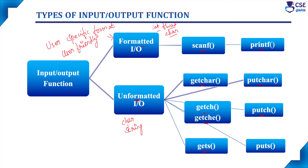So formatted and unformatted input/output functions are the two types used in C programs. Formatted input/output functions are commonly used because scanf accepts all kinds of input and printf displays output on the output screen. Unformatted input/output functions are used wherever character or string data needs to be accepted, but they cannot handle integer or floating point values and are not as user-friendly as formatted functions.